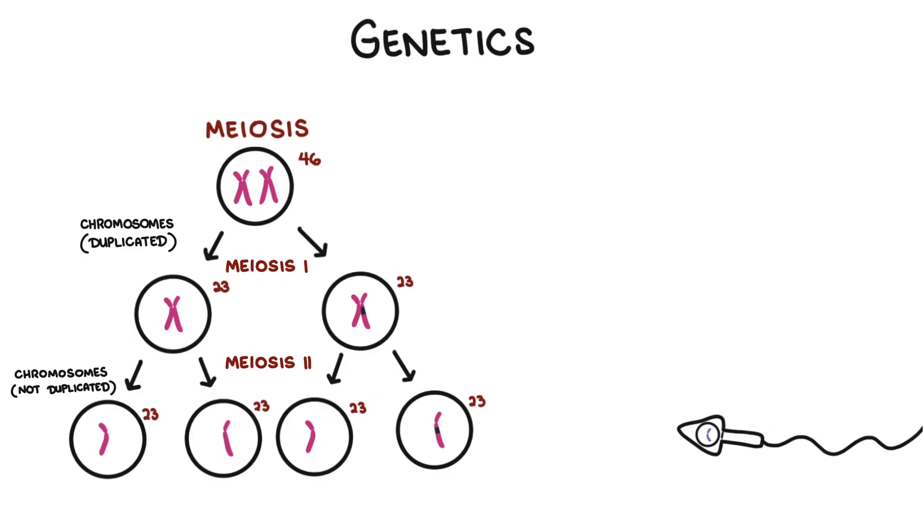The male sex cell, the sperm, will have 23 chromosomes which then fertilizes the egg and the baby is born with 46 chromosomes, 23 from mom and 23 from dad.